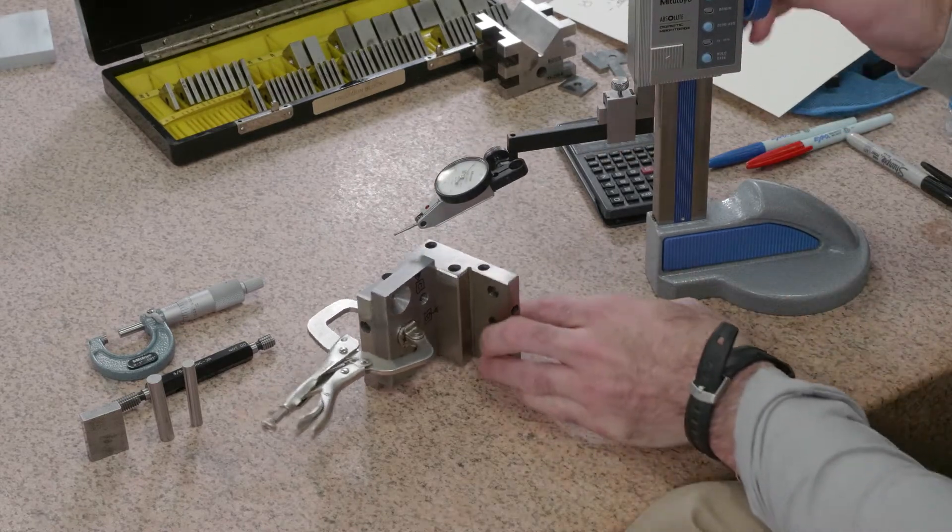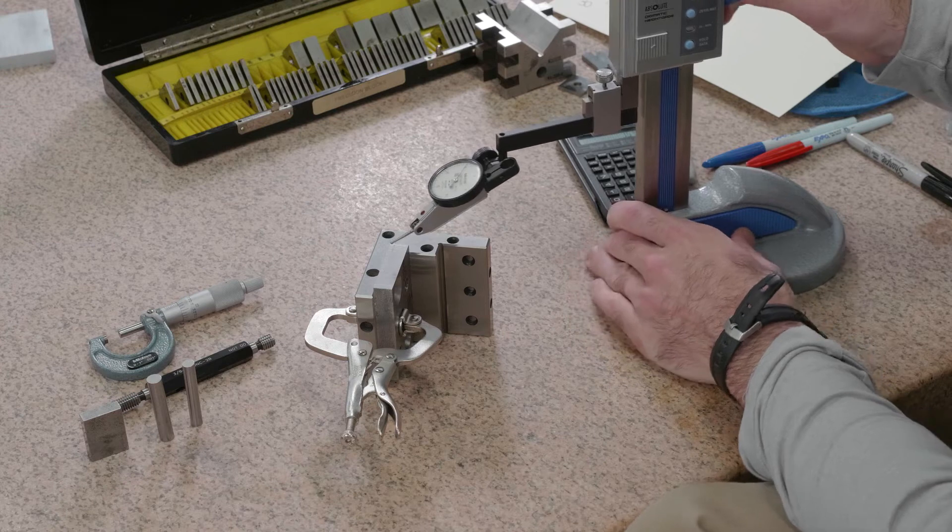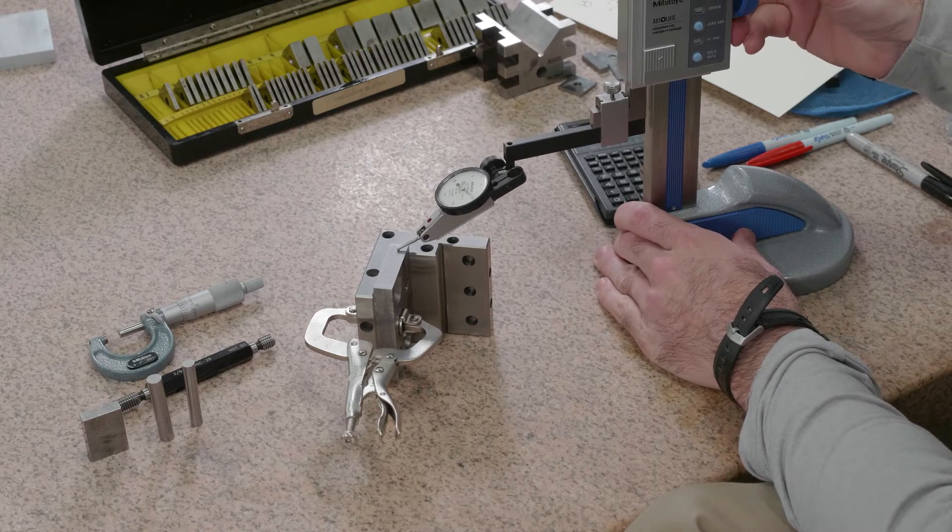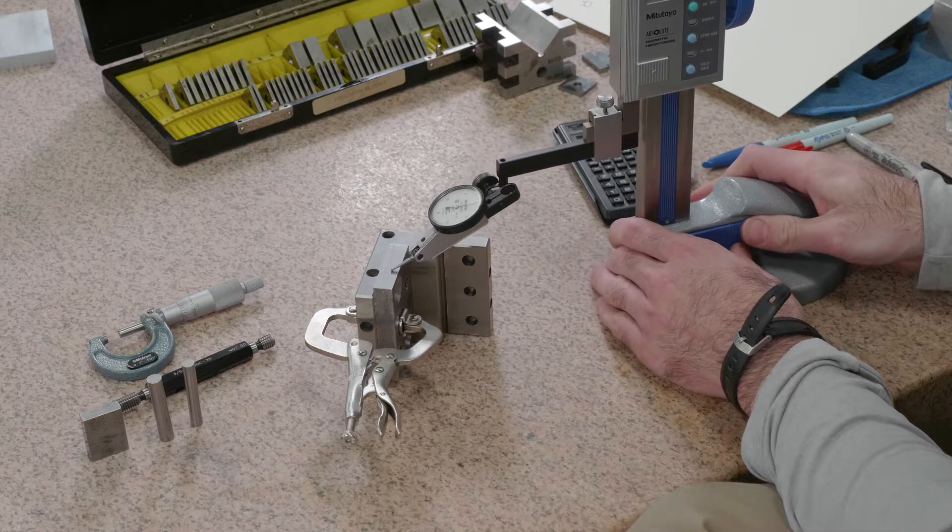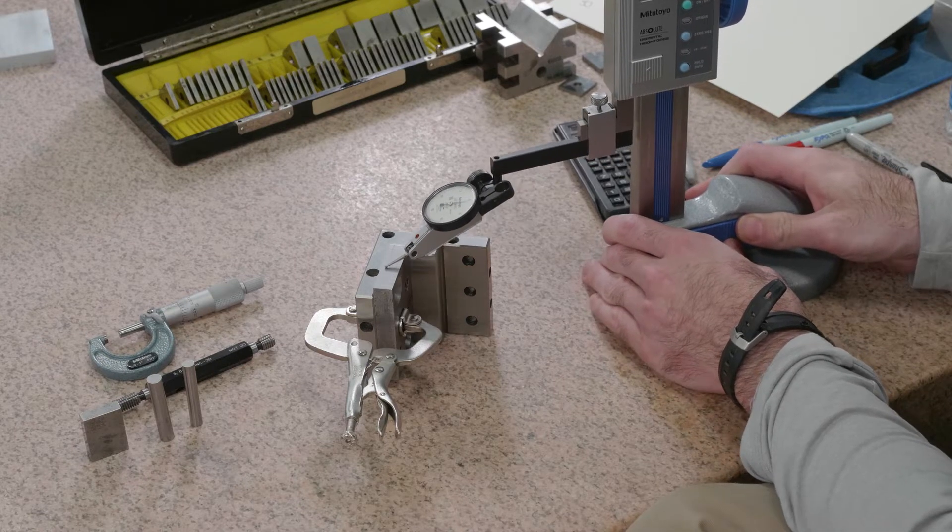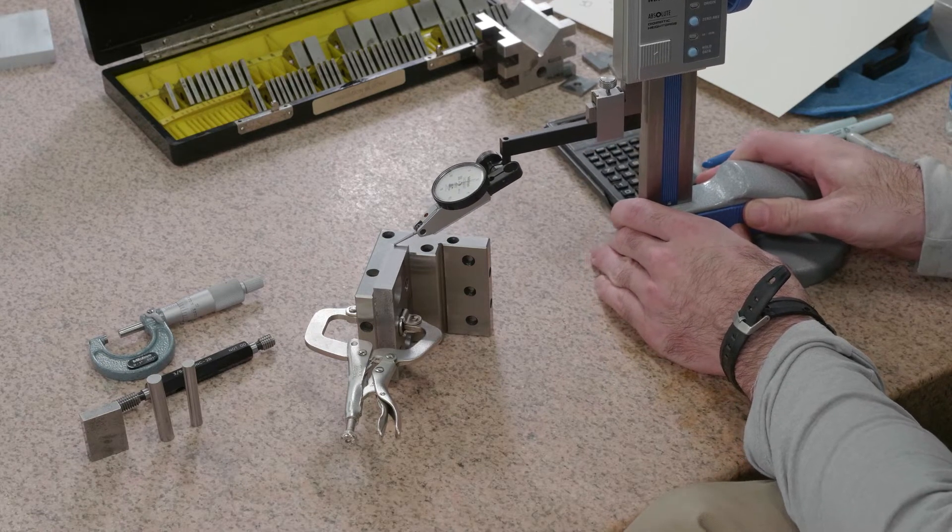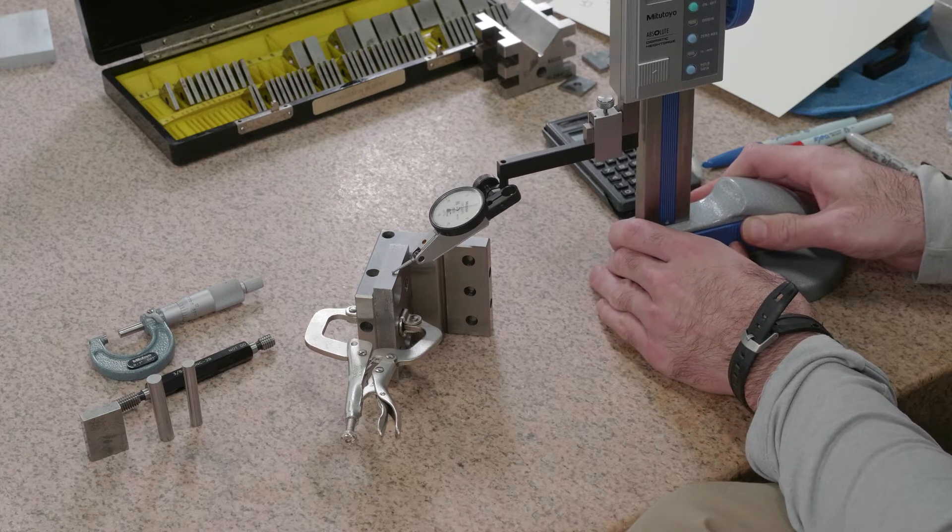Same idea. I'm going to bring my indicator over. I'll lower it until I hit zero and I'm going to sweep. So again, we're good to within about a thousandth. So that datum is fully qualified, no problem at all.